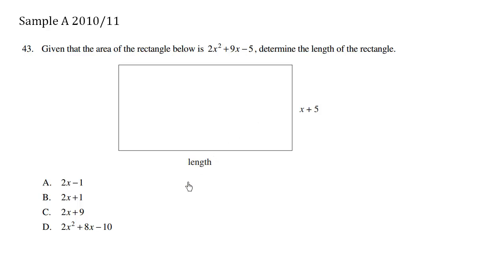Because this times this should be the area. So let's see if we can divide. Our factor here is x plus 5. I'm going to use long division to solve. We have 2x squared plus 9x minus 5.